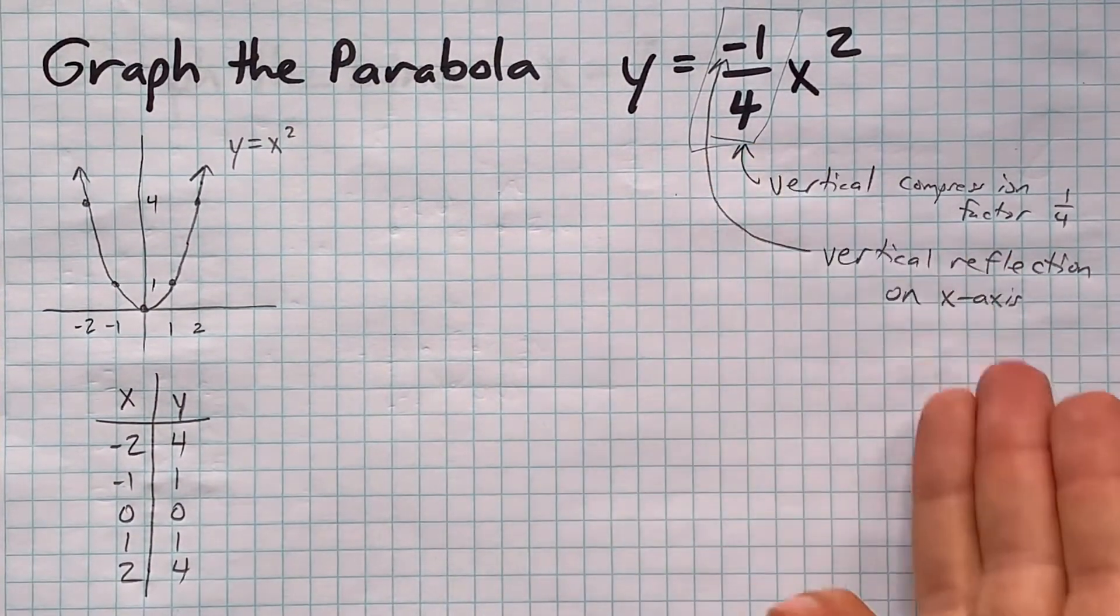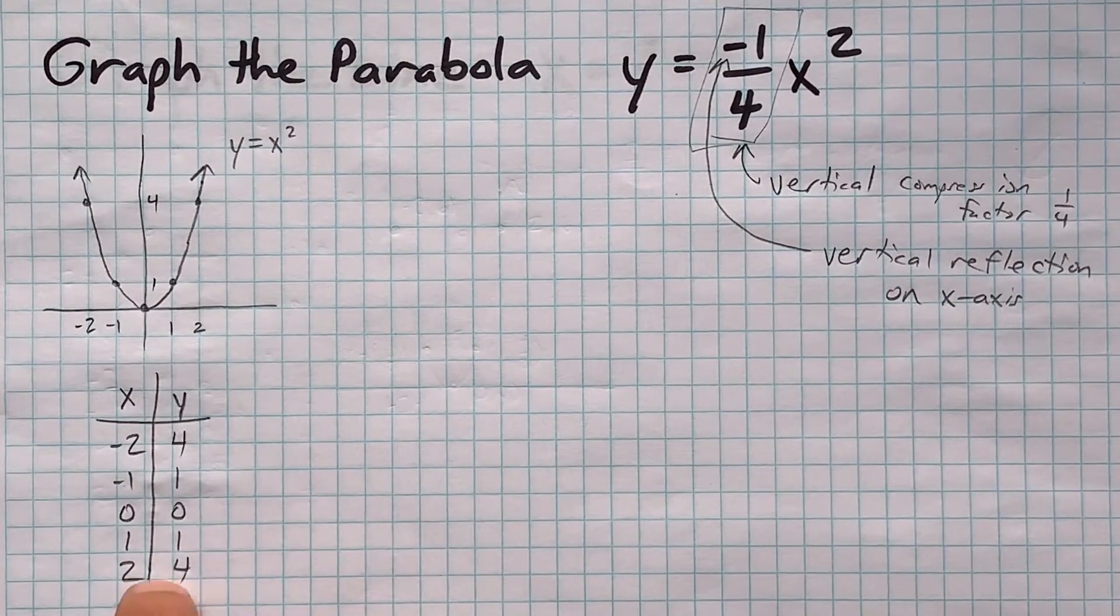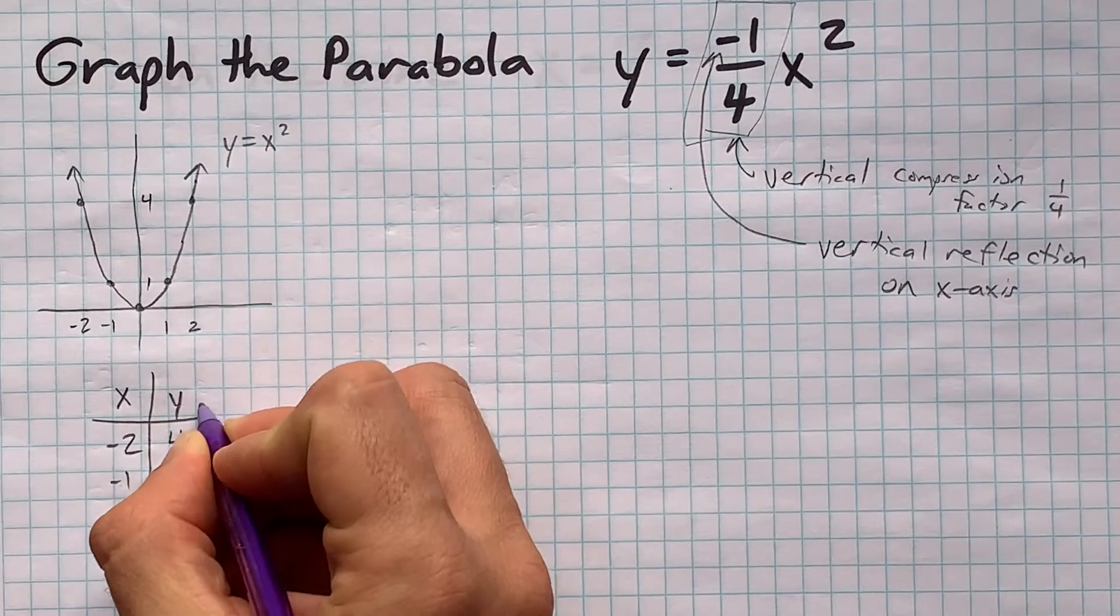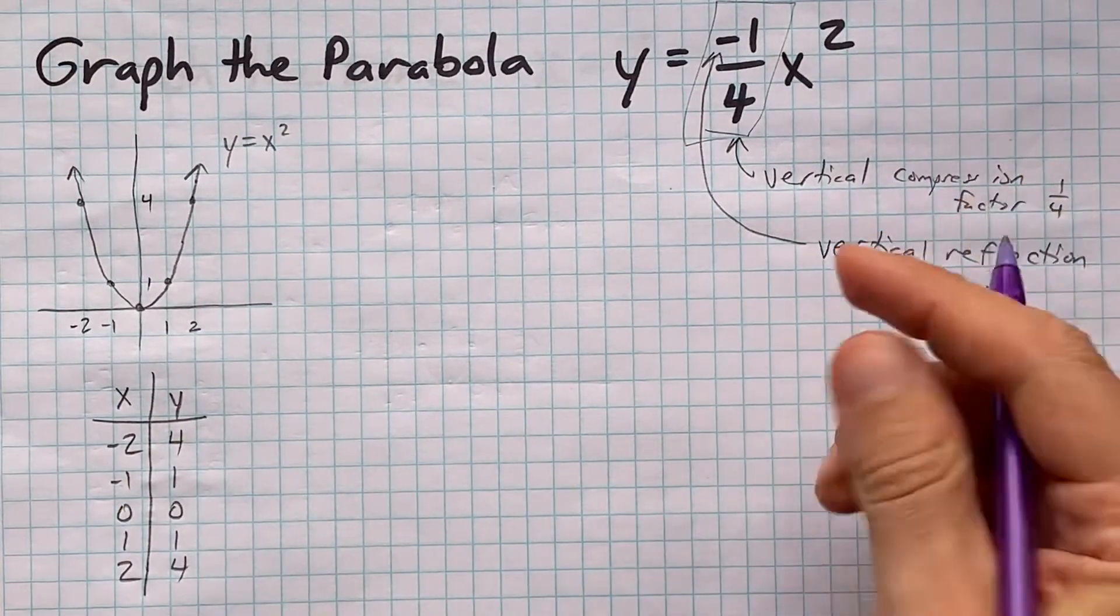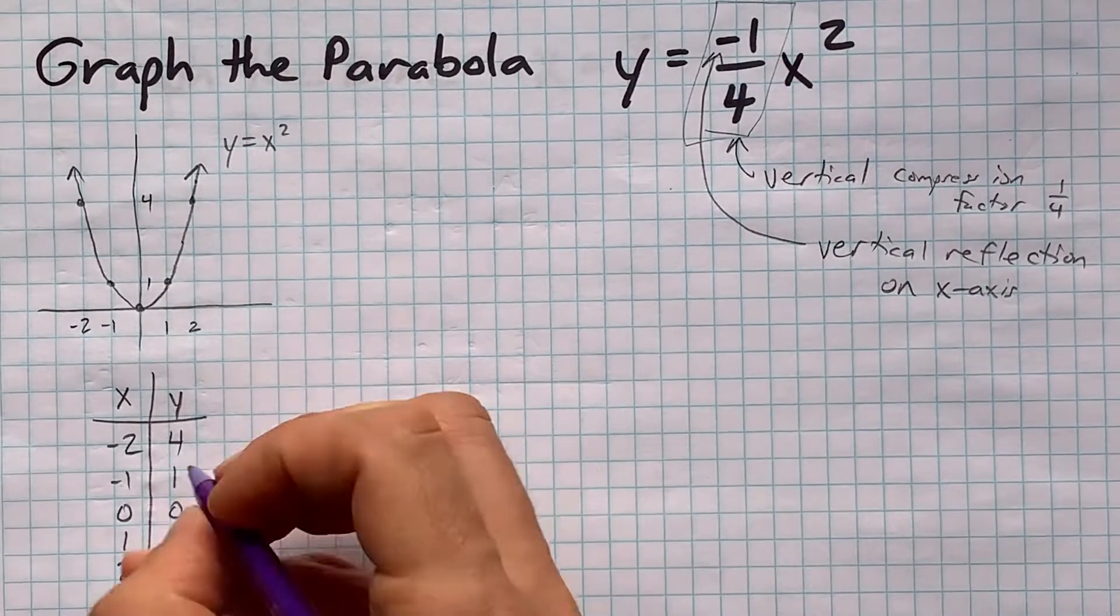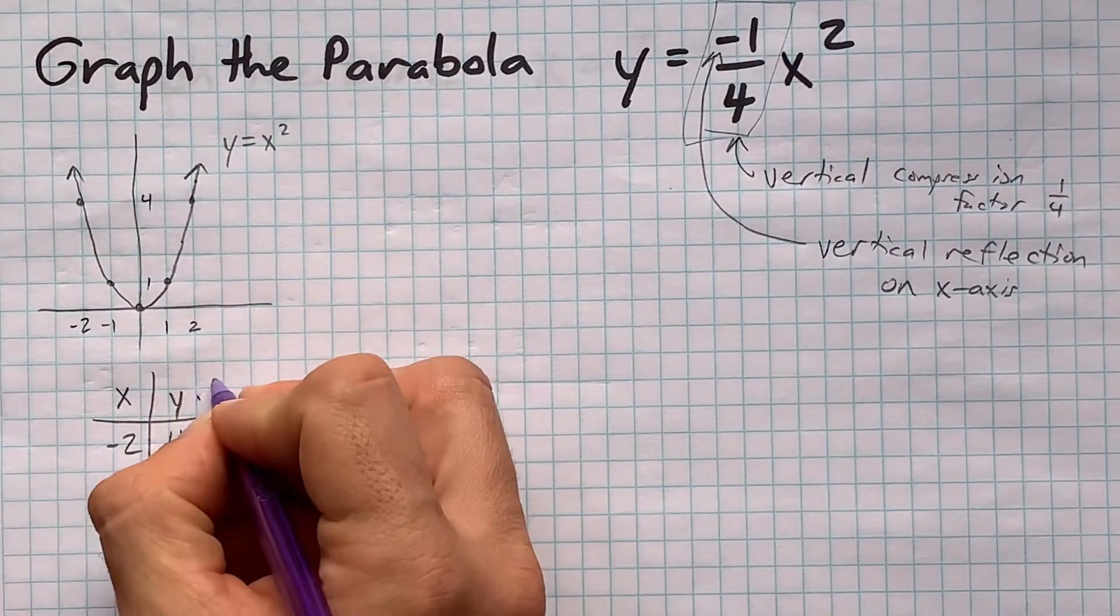Well, what's the effect of those on the parabola itself? In order to apply the vertical compression or the shrinking vertically, we're going to multiply each of these y values by a quarter.